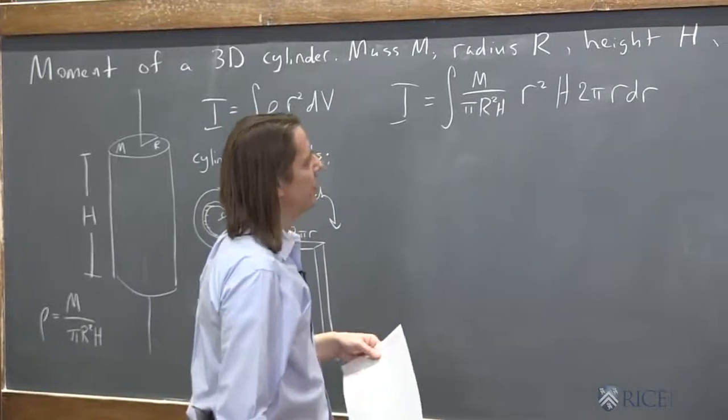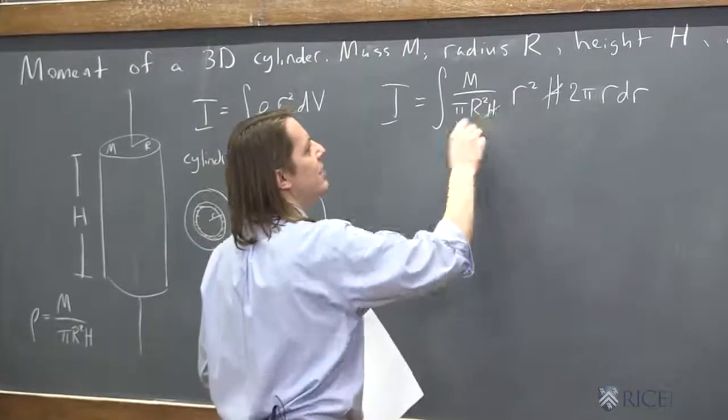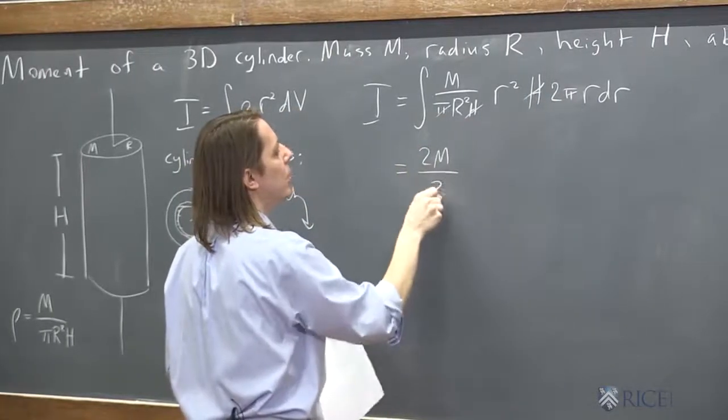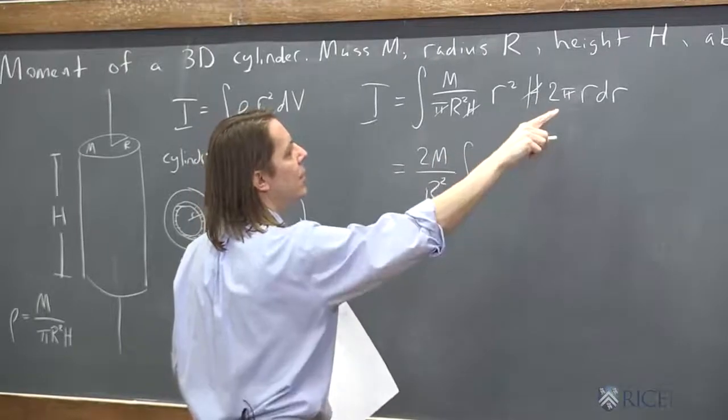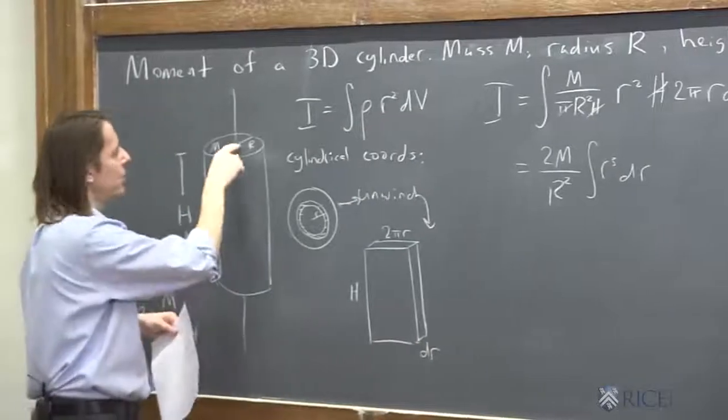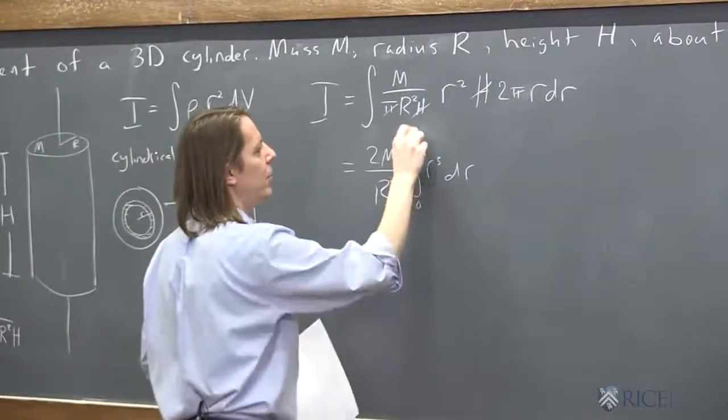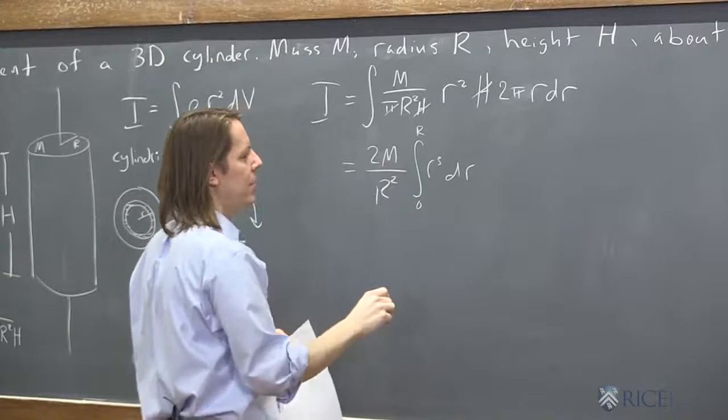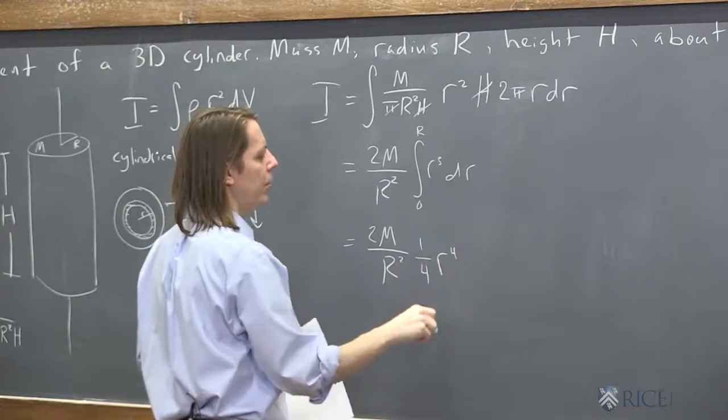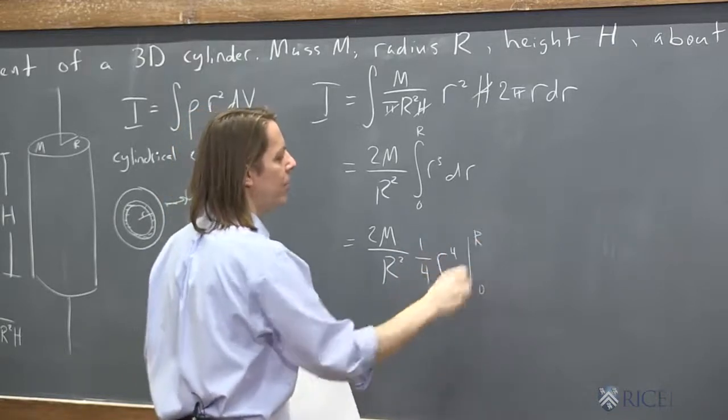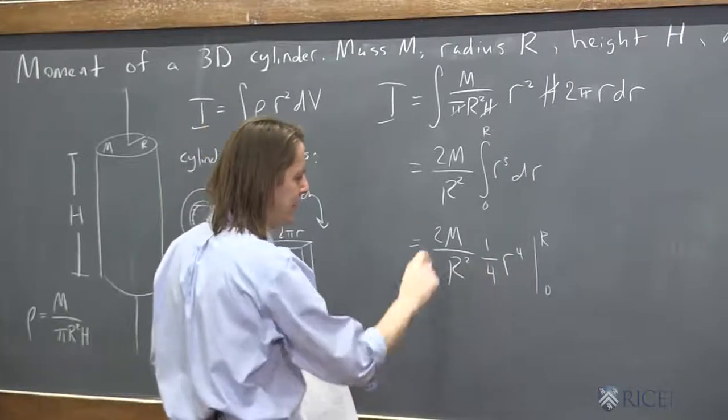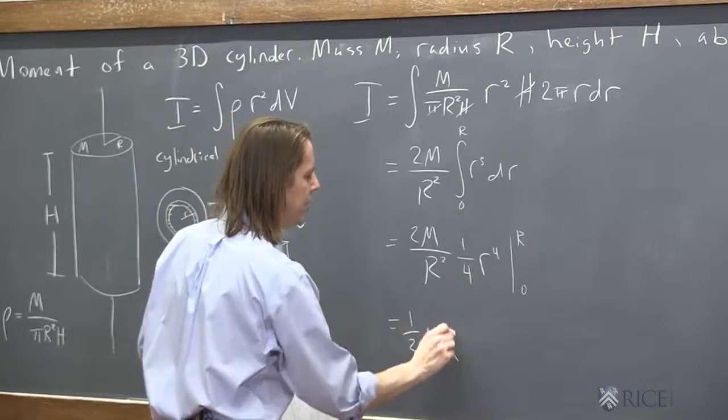Let's see. So we can just start combining things. We can cancel the H out, cancel the π, and we're left with 2M over R² times the integral of r³ dr. And the limits for r is 0 to big R, for the integrating little r, 0 to big R. This is looking familiar. 2M over R², one fourth r to the fourth, evaluated from 0 to big R, the radius. So you plug that in there and you get big R to the fourth, and that four, and this is what? One half M big R squared.